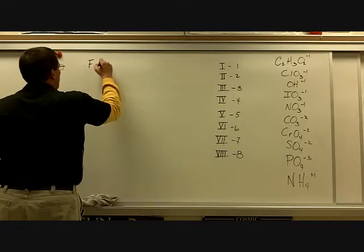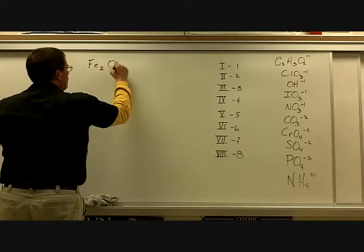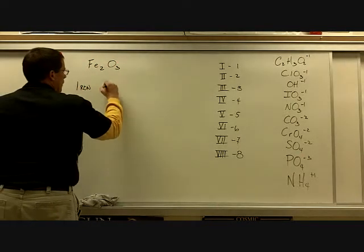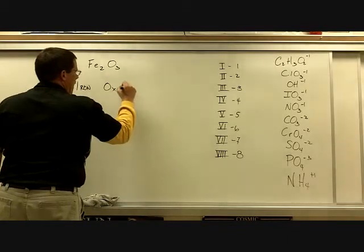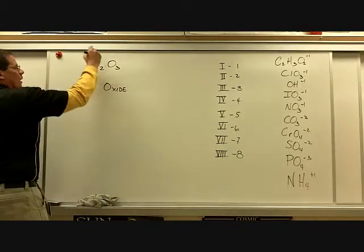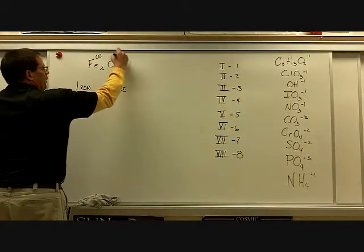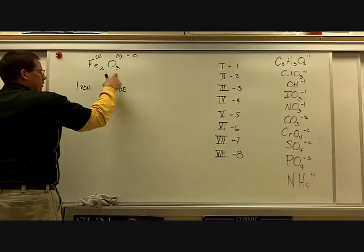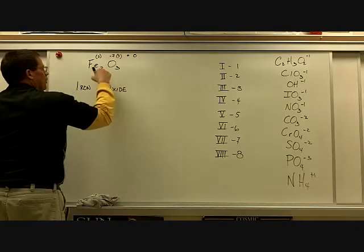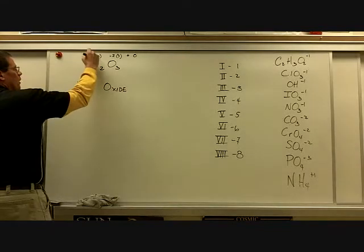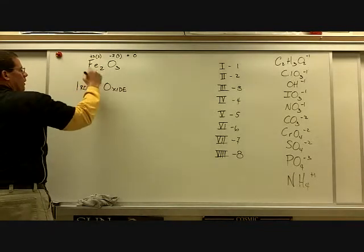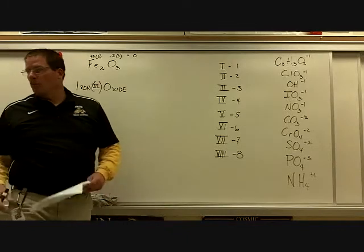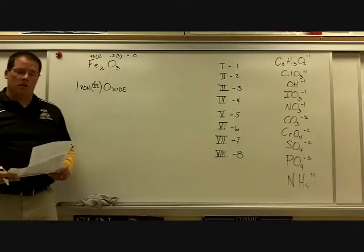Fe₂O₃ — we have two irons and three oxygens. Each oxygen has a negative-2 charge. For the formula to balance, each iron must be plus-3. Iron can be 2 or 3, so plus-3 is valid. This is iron(III) oxide.